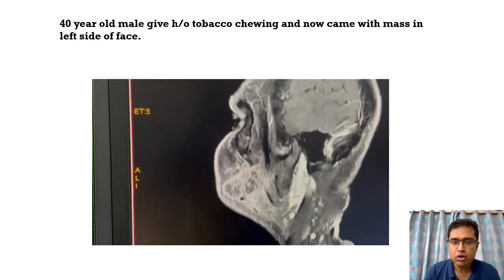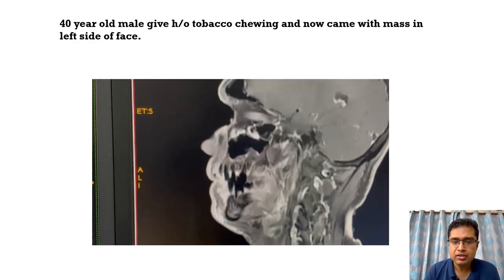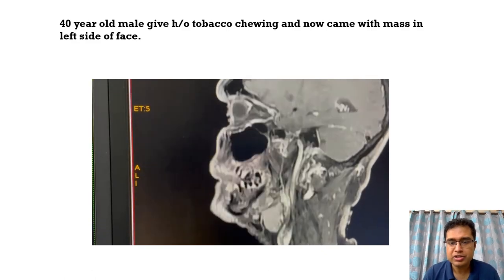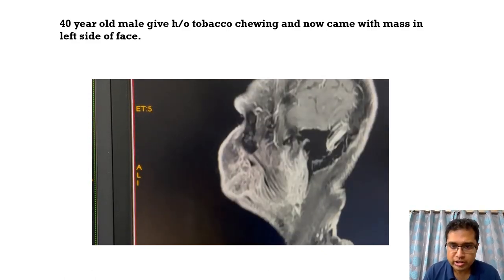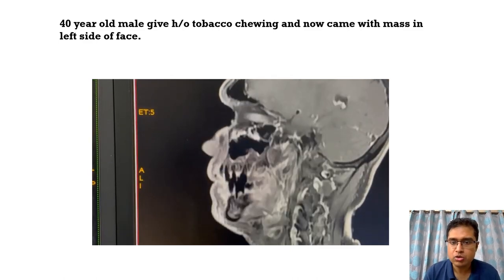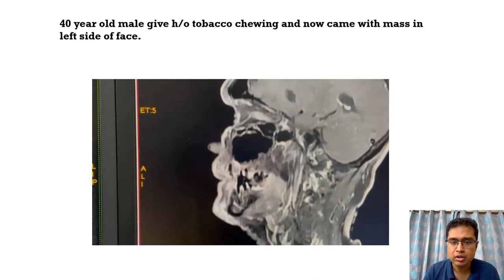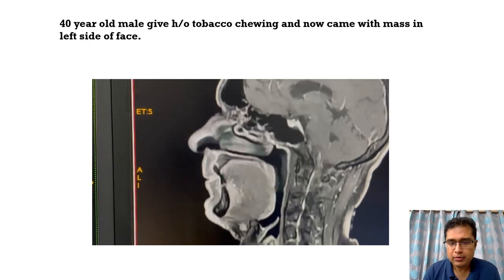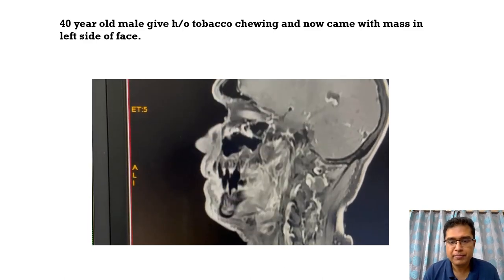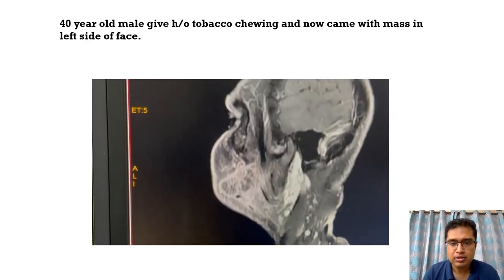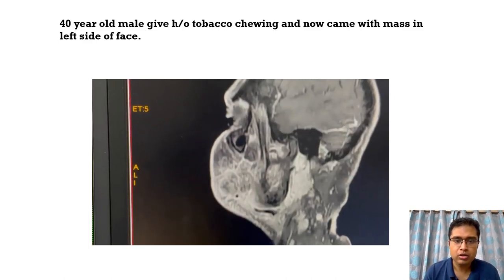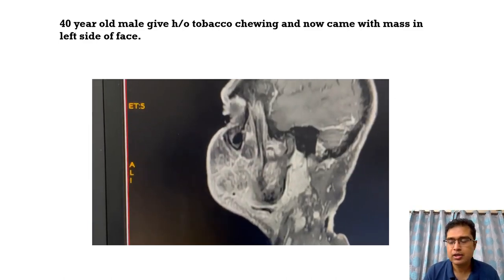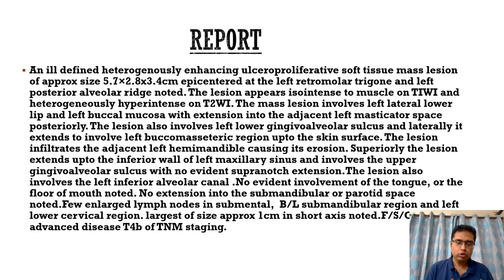On the sagittal post-contrast images, we can see this heterogeneously enhancing mass region, and importantly there is no supra-notch extension of this mass. There are some nodes in the submental and submandibular regions. The mass does not extend to the supra-notch area, and the skull base is also clear.